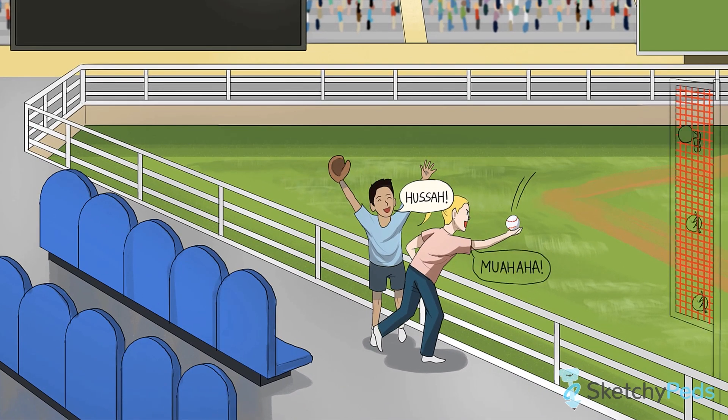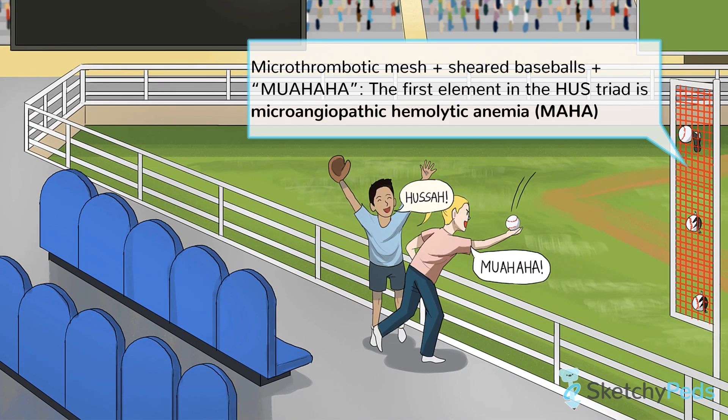The anemia is a microangiopathic hemolytic anemia, and is Coombs negative, which means it's a non-autoimmune hemolysis, but we'll talk about that a bit later. See those red blood cells, or baseballs, getting shredded in that red mesh? That's the hemolysis happening in small vessels right before your very eyes. And right next to them is a lucky duck who caught a home run, cackling evilly to remind you that it's much easier to say MAHA than microangiopathic hemolytic anemia.